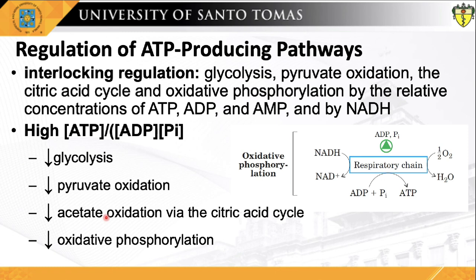These events can in turn evoke an increase in the rate of glycolysis, subsequently increasing the rate of pyruvate formation. When conversion of ADP to ATP lowers the ADP concentration, acceptor control slows electron transfer and thus slows oxidative phosphorylation as well.